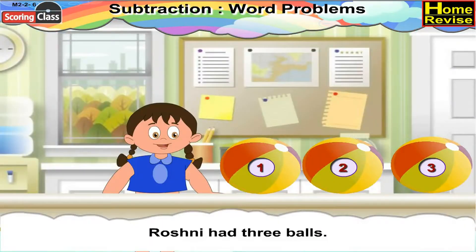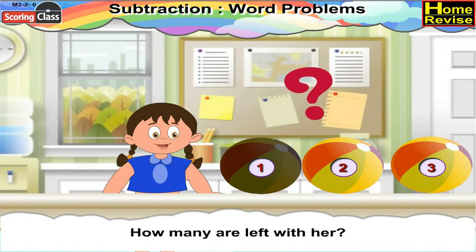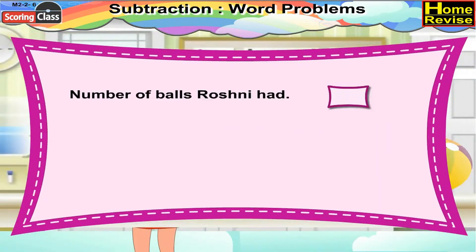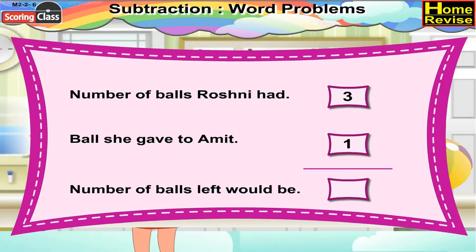Roshni had three balls. She gave one to Amit. How many are left with her? Number of balls Roshni had is equal to three. Balls she gave to Amit is equal to one. Now, number of balls left would be three minus one, that is two. So two balls are left with Roshni.